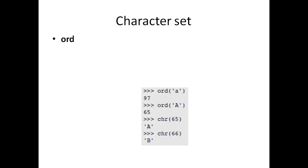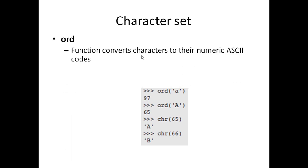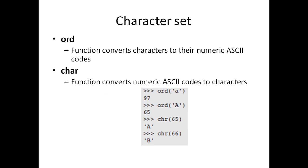For every character symbol there is a particular ASCII value. You can find the ASCII value using the ord() function — the ordinal function — which converts characters to their numeric ASCII code. For example, ord('a') gives 97 and ord('A') gives 65. Conversely, the chr() function converts an ASCII code back to a character — chr(65) gives 'A' and chr(66) gives 'B'.